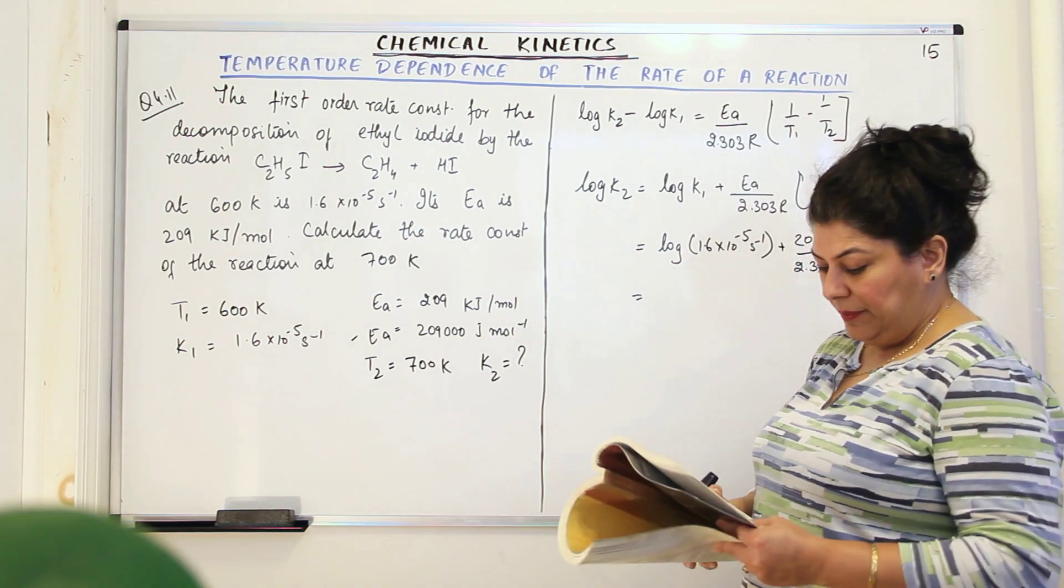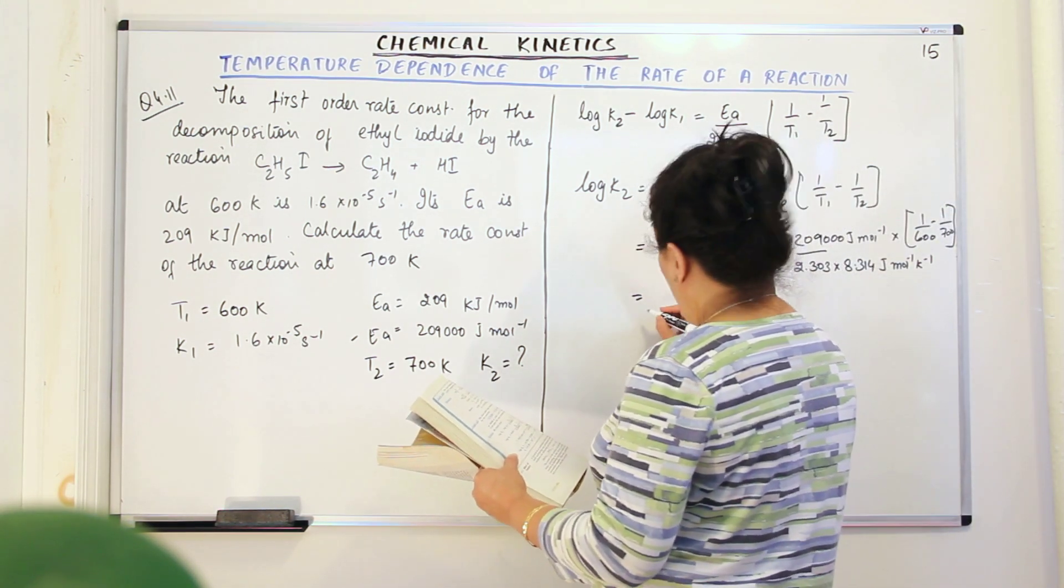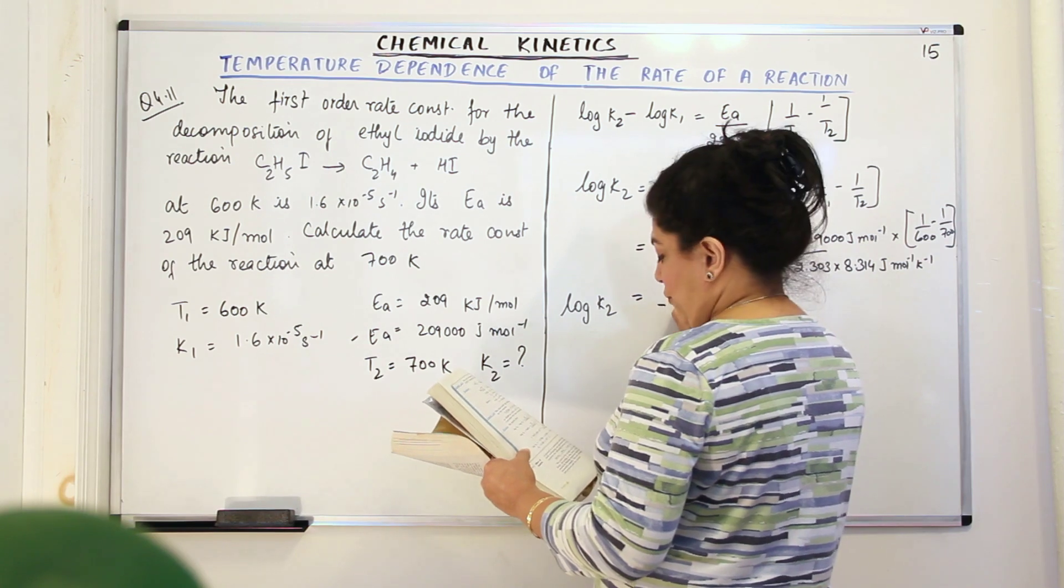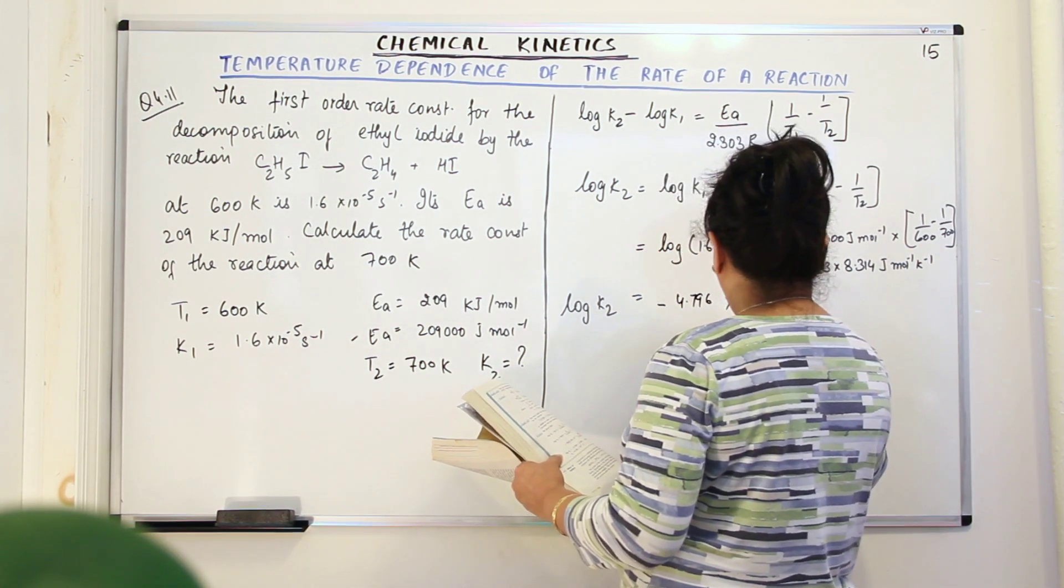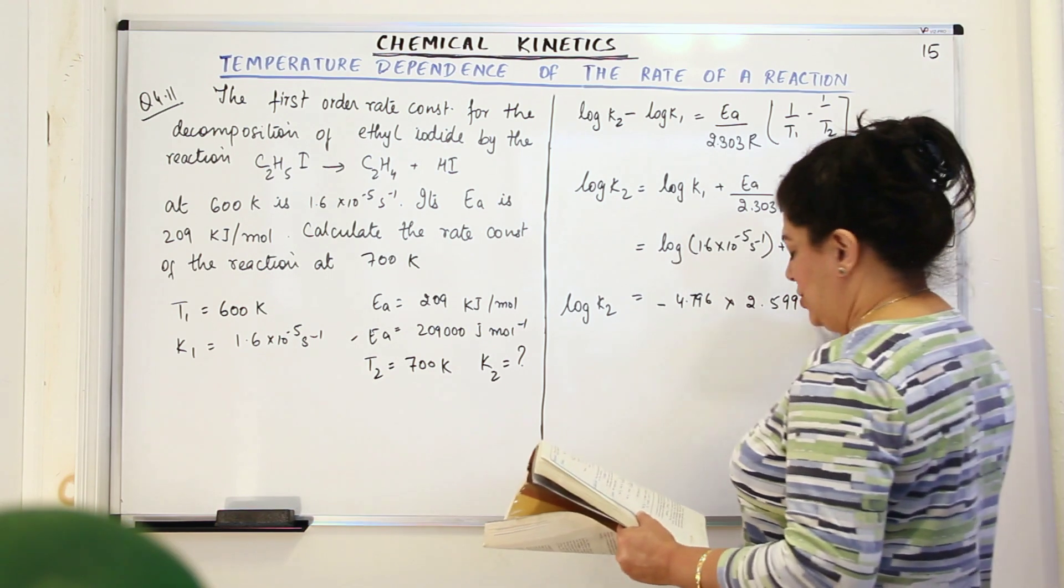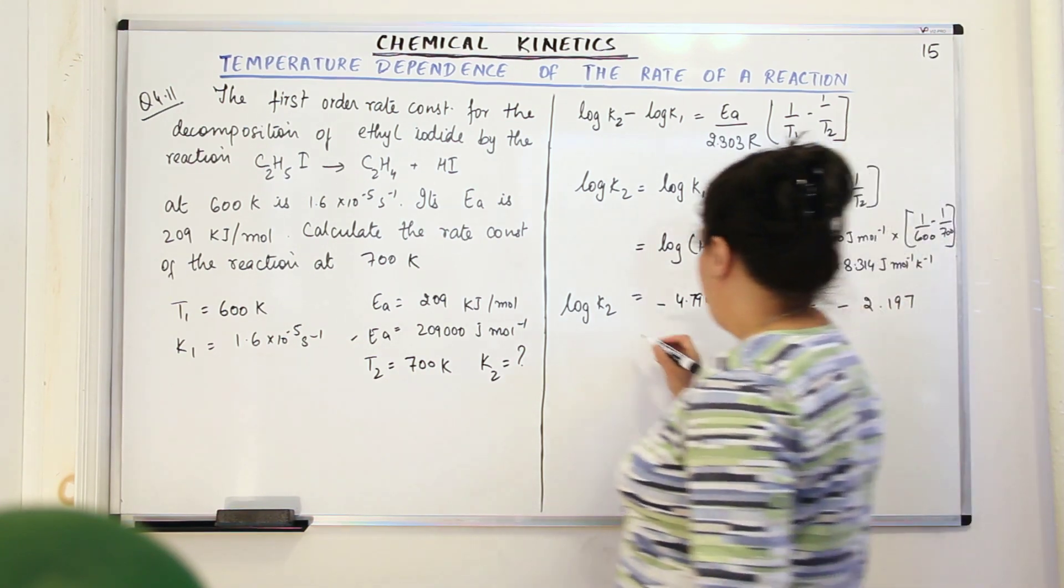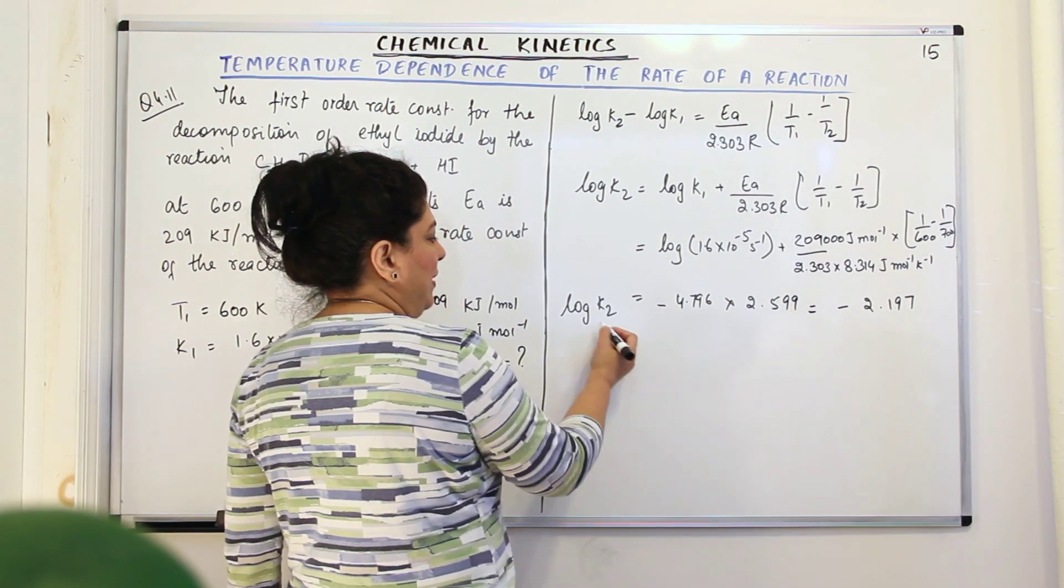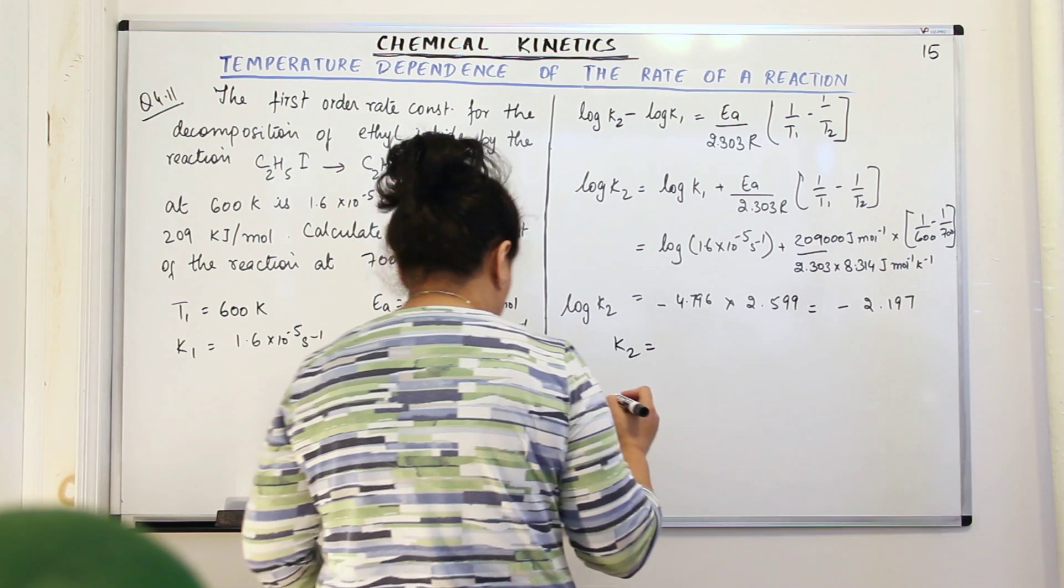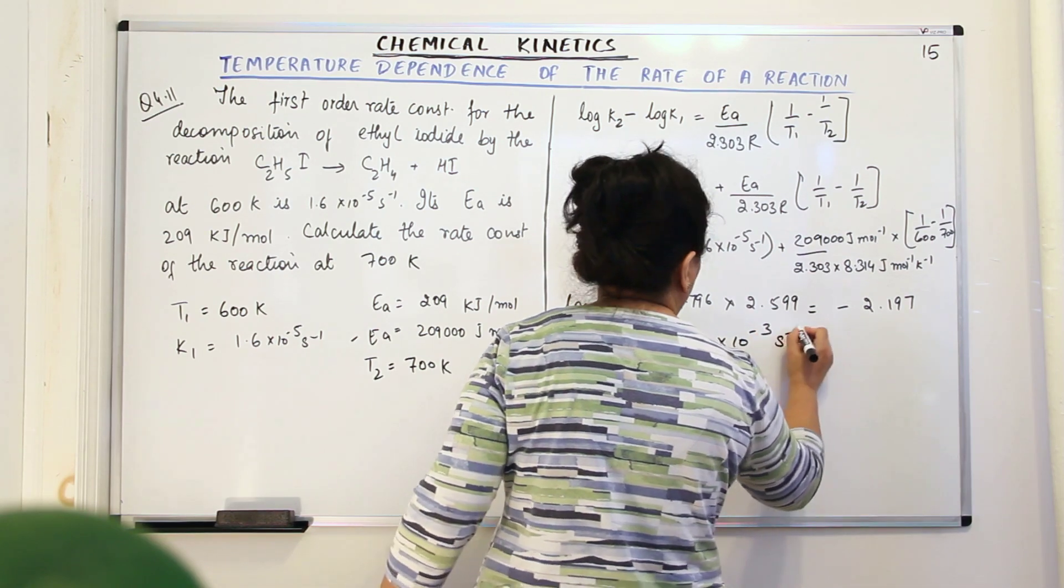And now when you solve all of this, you will get the value of, you will get log K2 would be equal to log of this is minus 4.796 into 2.599. Now when you solve all of this, you get 2.599, which is equal to minus 2.197. So when you find the log of K2 is this, therefore K2 would be anti-log of this. So K2 therefore would be equal to, when you find out the anti-log of it, would be 6.36 into 10 to the power minus 3 per second.